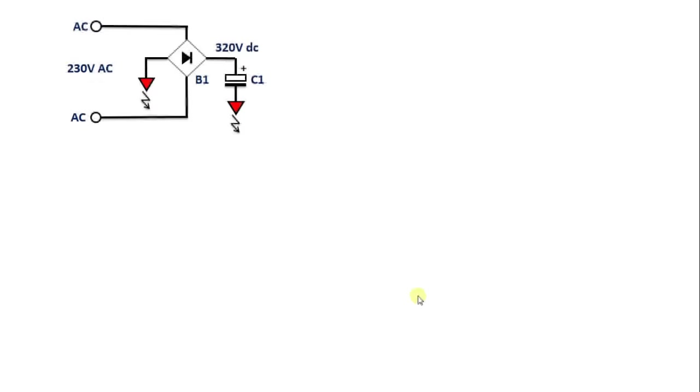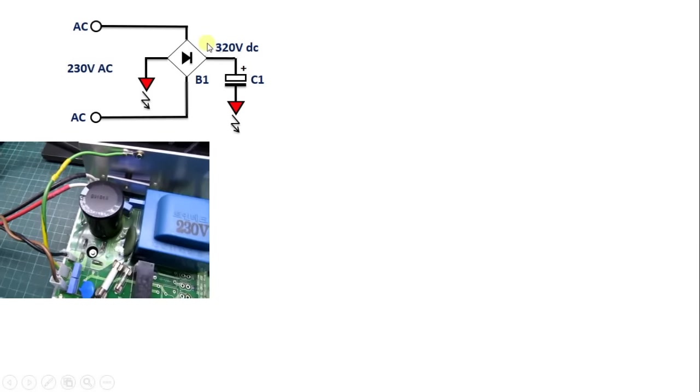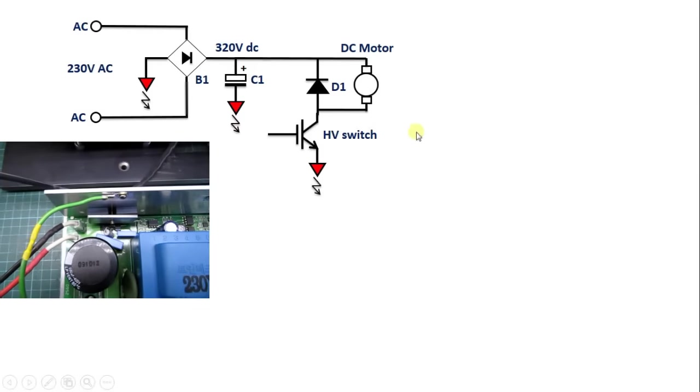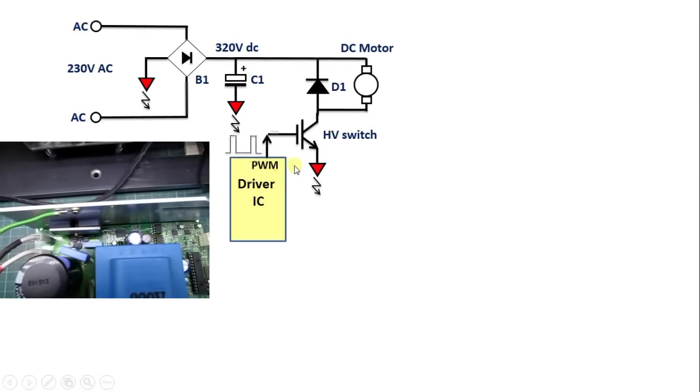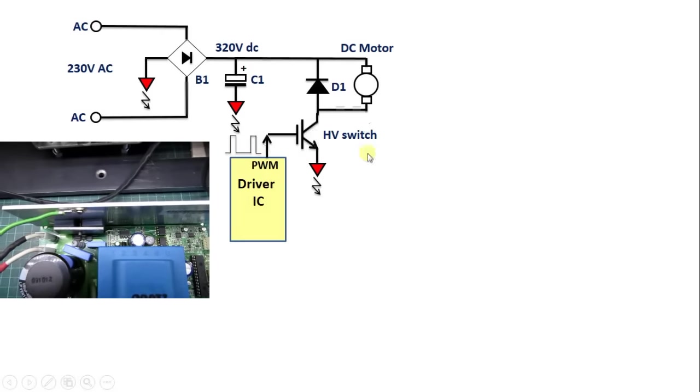On the primary side, the 230 volt AC voltage is rectified to around 320 volt DC, which supplies a standard step-down circuit that controls the motor voltage via a pulse-width modulation PWM signal that drives the high voltage switch.